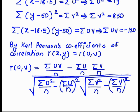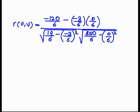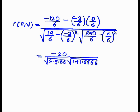Substituting all values: minus 120 divided by 6, minus (minus 3 by 6)(0 by 6), over square root of (19 by 6 minus (minus 3 by 6) squared) times square root of (850 divided by 6 minus (0 by 6) squared). After calculating, we get minus 20 divided by square root of 2.9166 times square root of 141.6666.